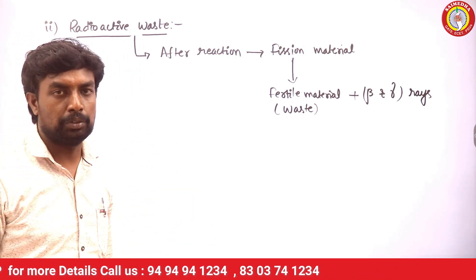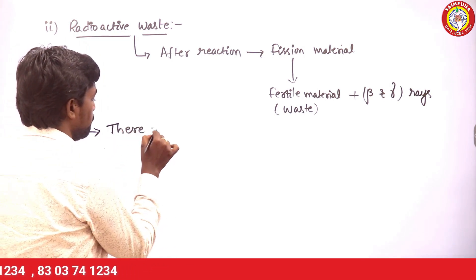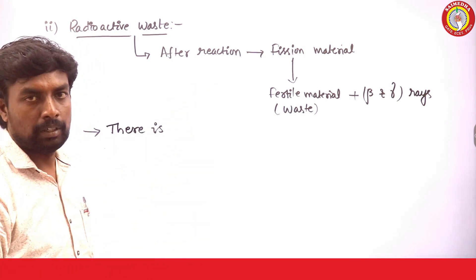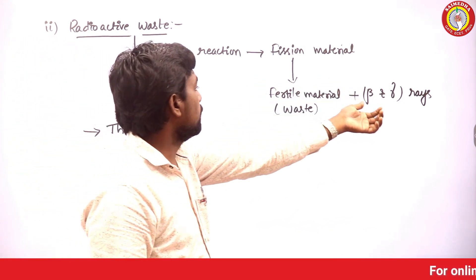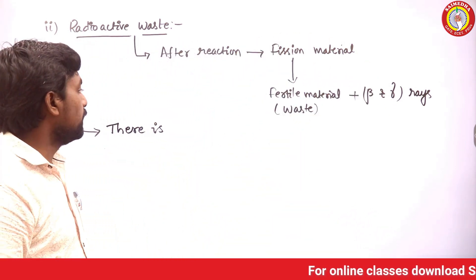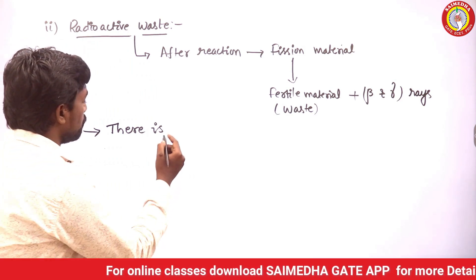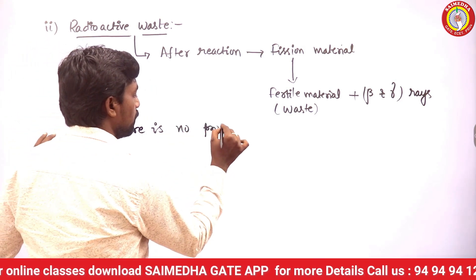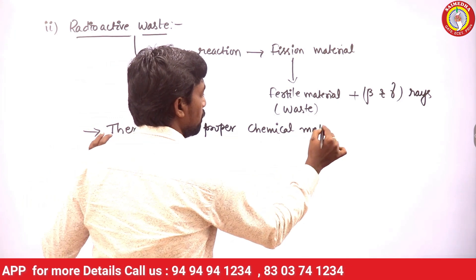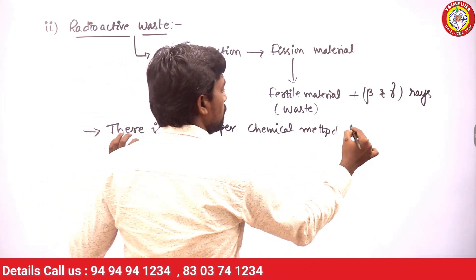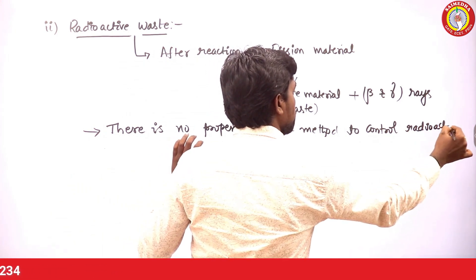There is no proper chemical method to control radioactive waste. After the reaction, the waste contains beta and gamma rays and fertile material residue. There is no proper chemical method to control this radioactive waste.